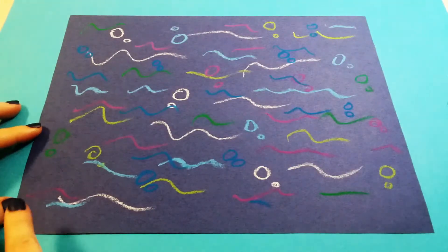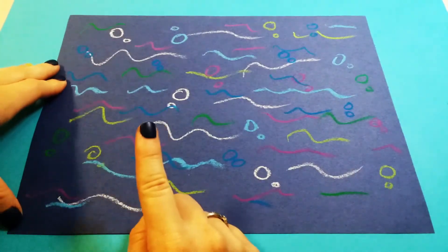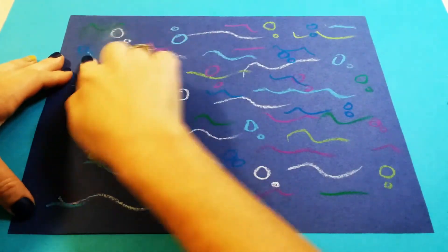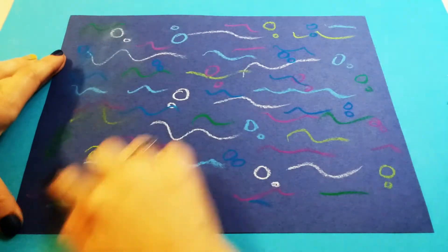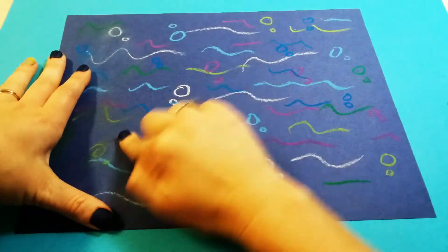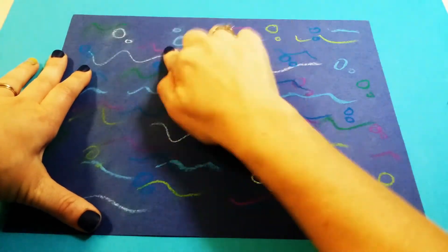Once you've added in little wavy lines and little circles of all the colors, you're going to take one finger and what I want you to do is just kind of blend it into your paper. So it's almost like you're trying to erase it with your finger. And what it's going to do is kind of soften the lines and make it look more like it's underwater. And you want to do this over every line and every circle that you drew.